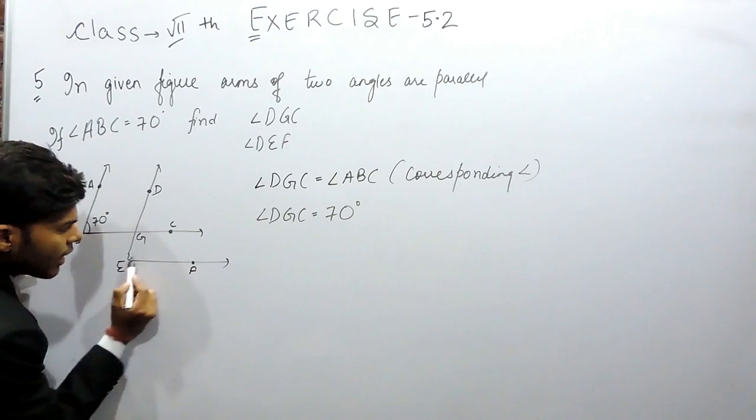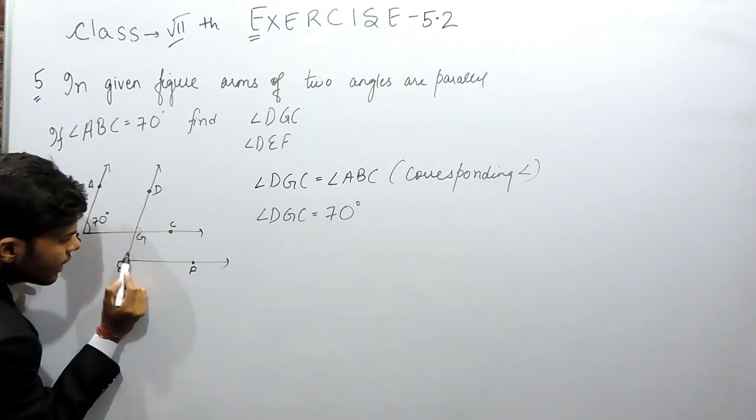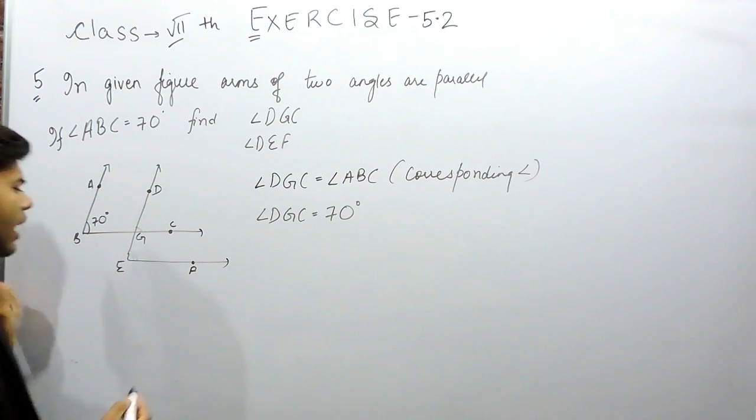Now you can see that these two are parallel lines. This is a transversal. So this angle and this angle will be equal because of corresponding angles.